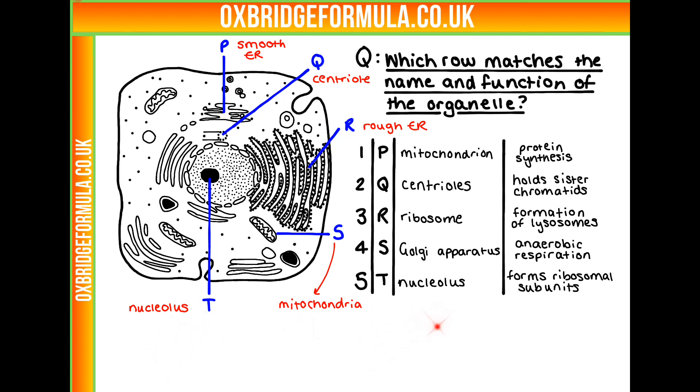So let's look at our table. Do any of these names not match the labels we've assigned? Well, yes. P is not a mitochondrion and S is not the Golgi apparatus. So we can cross those two out immediately.